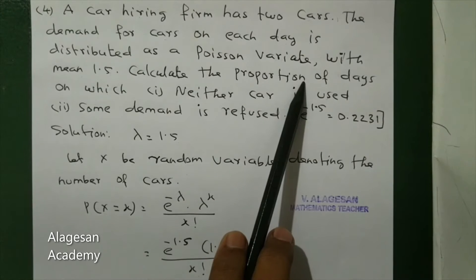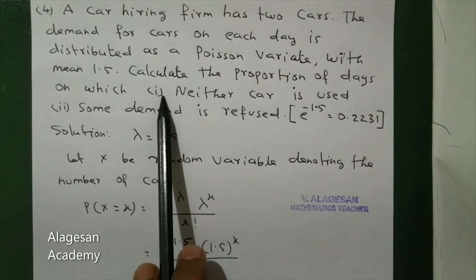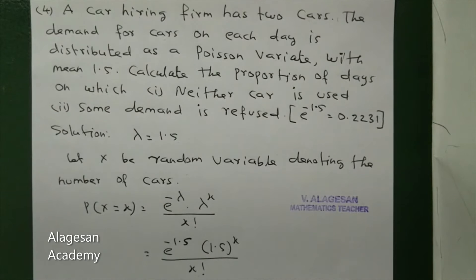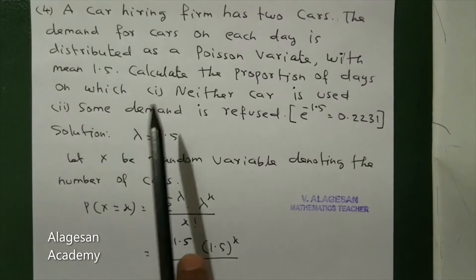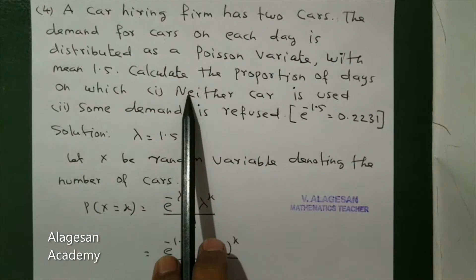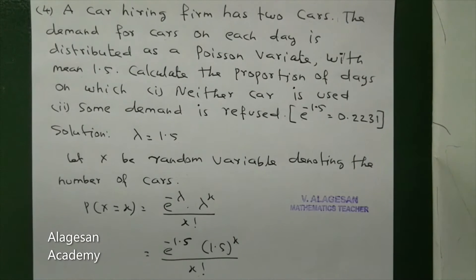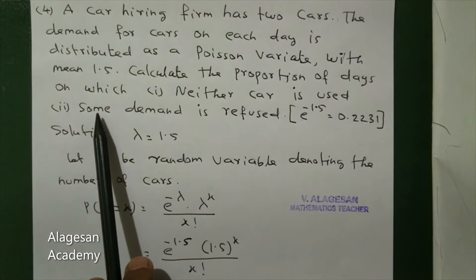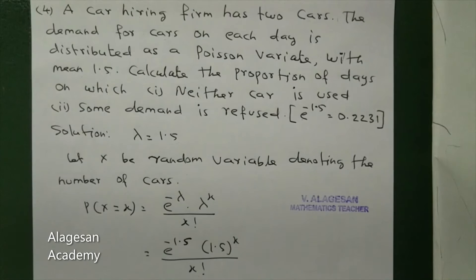Proportion is nothing but probability. First, neither car is used — X is the random variable denoting the number of cars. So we need P of X equal to 0. Second, some demand is refused, meaning demand is greater than 2.